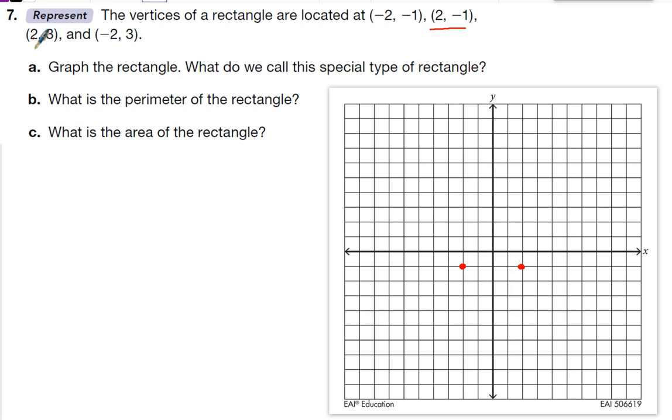My third one is 2, 3. So I'm going to start at the origin, go over 1, 2, and then up 3. And then negative 2, 3, starting at the origin, 1, 2 to the left because it's negative, up 3.